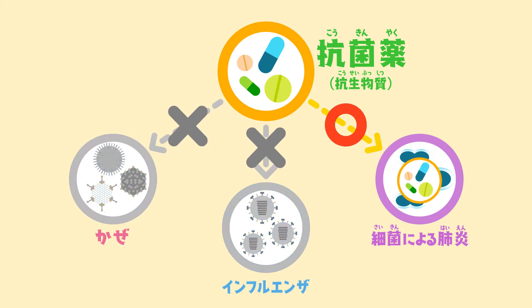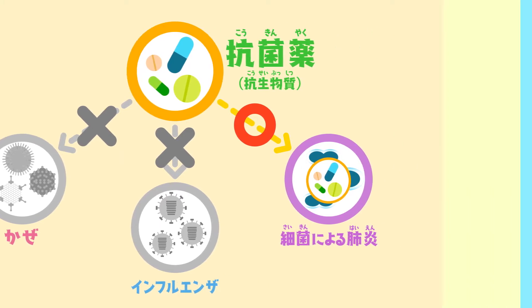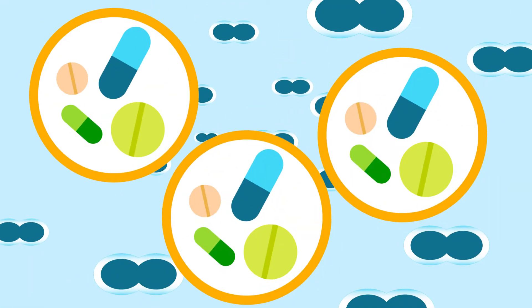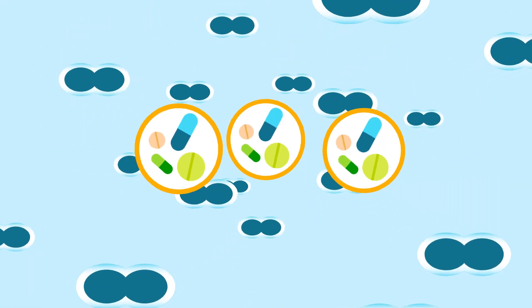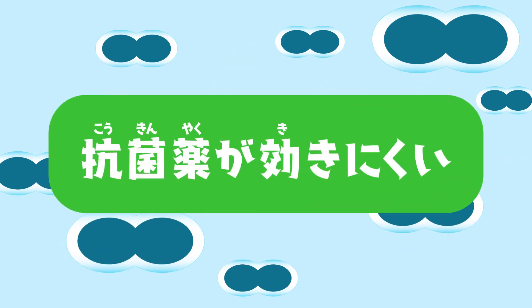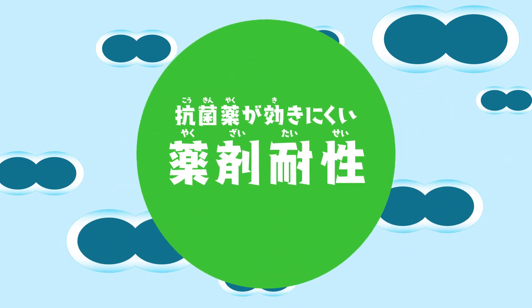Antibiotics kill bacteria, but they are not effective against the common cold or influenza. Sometimes, however, antibiotics cannot kill bacteria. This is because the bacteria has developed resistance to the antibiotic, which is called antibiotic resistance.